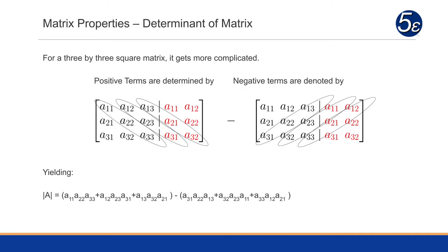For a three-by-three square matrix, it gets more complicated. The square matrix is determined by a₁₁, a₁₂, a₁₃. But what we've done is we've created two more columns where we duplicated the first and second column and just moved them over.